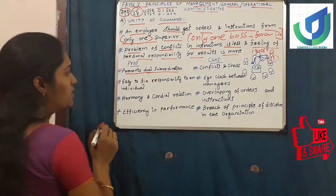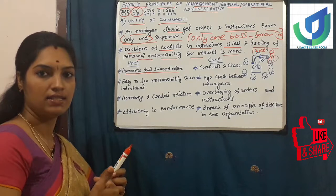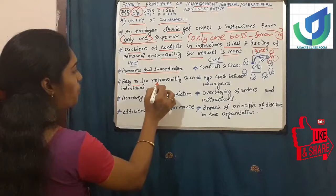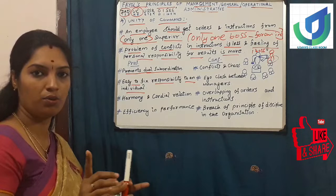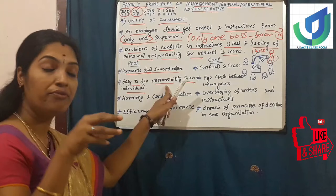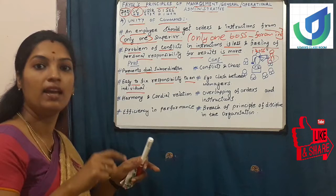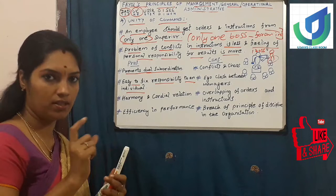So it prevents dual subordination. When family members - two or three people - are giving instructions to the subordinates, dual subordination will take place. The second pro is: it is easy to fix responsibility to an individual. If we follow unity of command and only one boss is giving instructions to an employee, the command will be unique and it will lead to fixing the responsibility of an individual person. The employee cannot escape from their job.